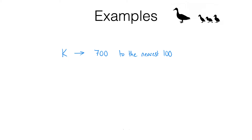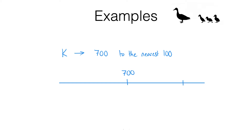If you round a number to the nearest hundred you know you're going to have to get something like 0, 100, 200, 300, 400 and so on. So I'm going to represent these on a number line — not all the possibilities, just the one that it actually rounded to, which is 700, and the next one up in the 100 times table, that's 800, and the one down from 700 which is 600.